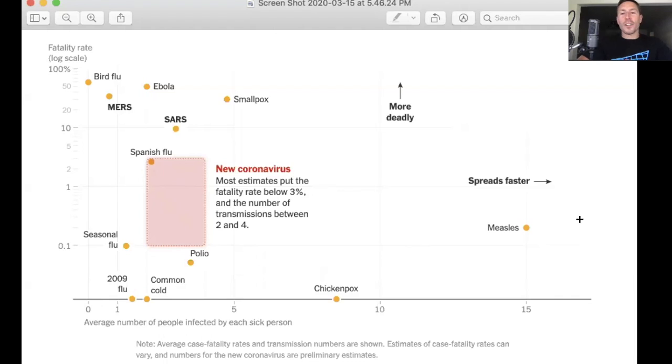Measles is way out here to the right on the x-axis. Though it has a case fatality rate less than 1, the average person with measles infects 15 to 18 people. Chickenpox is about 7 or 8. The common cold is between 1 and 2.